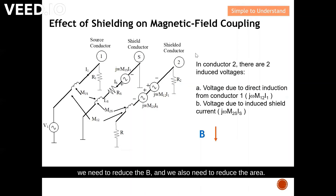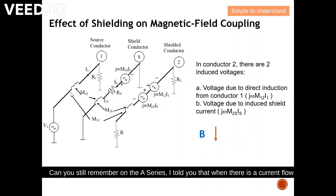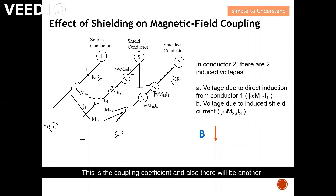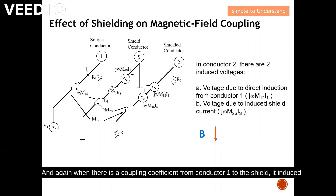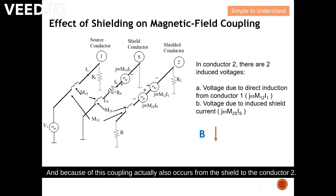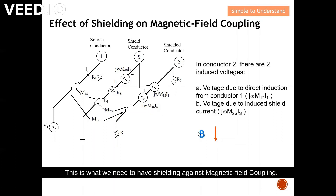I'm going to describe how we actually reduce B. As I explained in the A series, when current flows on conductor 1, magnetic coupling occurs with coupling coefficient M12. There is also a coupling coefficient from conductor 1 to the shield. When this coupling occurs, it induces a voltage which results in a current flowing in the opposite direction to the source current. Because of this, coupling also occurs from the shield to conductor 2, so B is reduced due to a cancellation effect. This is what we need for shielding against magnetic field coupling.